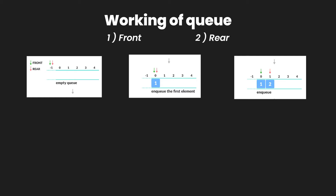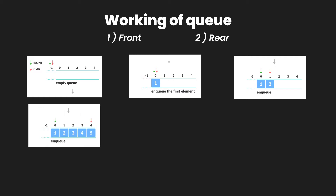When another element joins the queue, the front pointer keeps pointing at the first element, but the rear pointer changes to one, pointing at the second element. Similarly, if we add five elements, the front pointer points at index zero and the rear pointer points at the last element at index four.